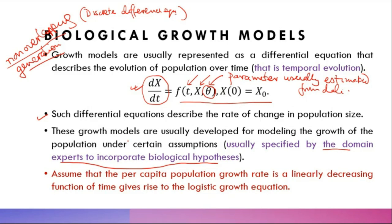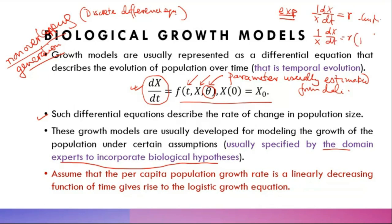Every model must be grounded in the underlying biological hypothesis. For example, if we assume that the per capita population growth rate is a linearly decreasing function of time, that gives rise to the logistic growth equation. If (1/x)(dx/dt) = r, a constant, we get the exponential model. If it is a linearly decreasing function of population size, we get the logistic model. Different forms of this assumption give rise to different equations.